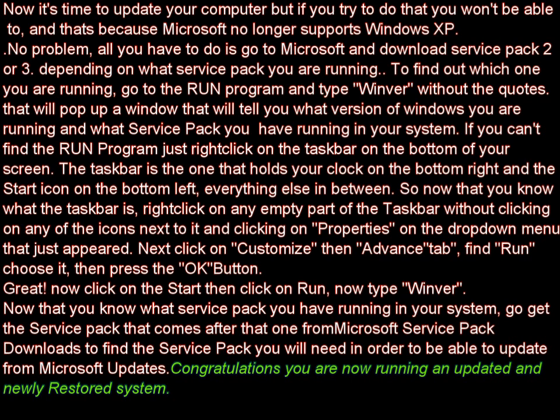If you can't find the Run program, just right-click on the taskbar at the bottom of your screen. The taskbar is the one that holds your clock on the bottom right and the Start icon on the bottom left, and everything else in between. Right-click on any empty part of the taskbar without clicking on any of the icons, then click on Properties in the drop-down menu. Next, click on Customize, then the Advanced tab, find Run, choose it, then press the OK button.